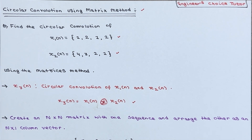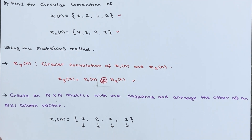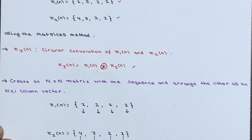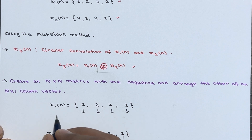To perform circular convolution using the matrix method, you have to follow this approach. First of all, create an N×N matrix with one sequence and arrange the other as an N×1 column vector.